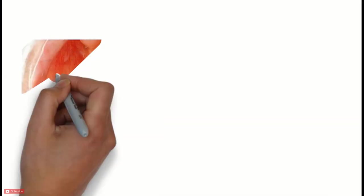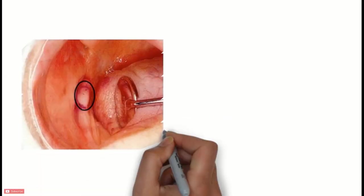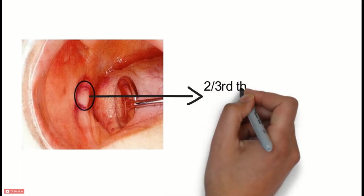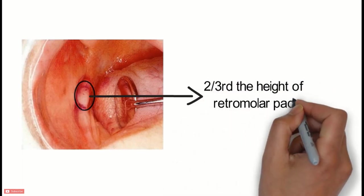In case of the mandibular arch, the plane of the occlusal rim should be at the level of two-thirds the height of the retromolar pad.